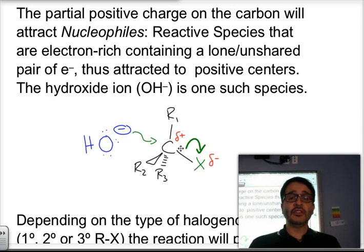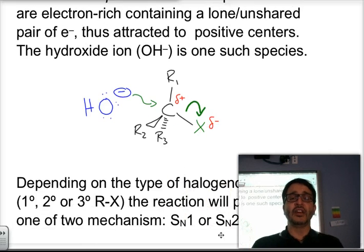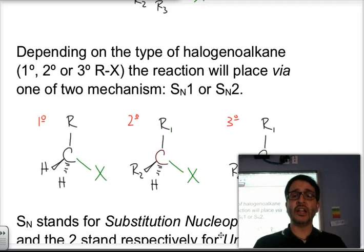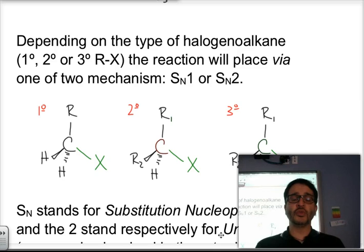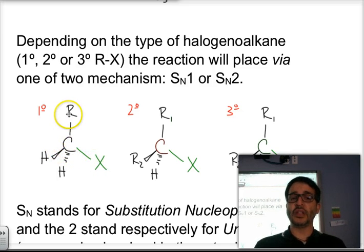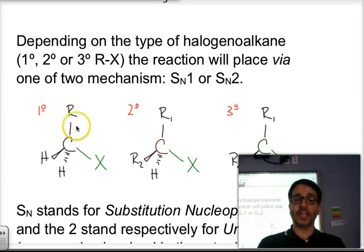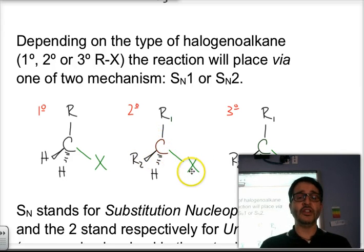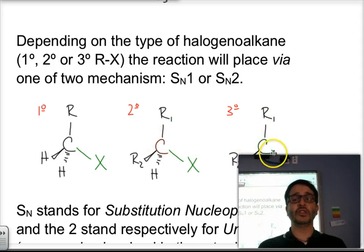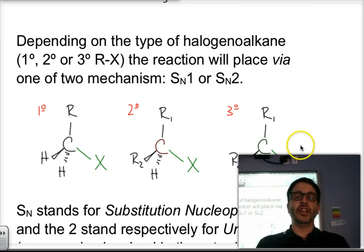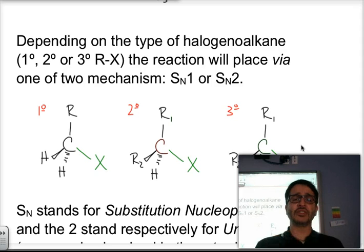Halogealkanes can be classified as primary, secondary, or tertiary, depending on the type of carbon to which the halogen is attached. If bonded to a primary carbon — connected to only one other carbon group, symbolized by R — it's primary. Two alkyl chains make it secondary, and three alkyl chains connected to the carbon bonded to the halogen makes it a tertiary halogealkane. There are different mechanisms through which reactions take place for primary versus tertiary halogealkanes.